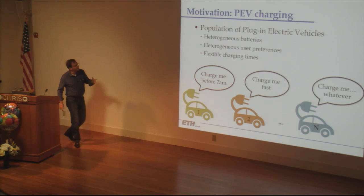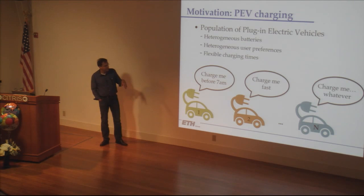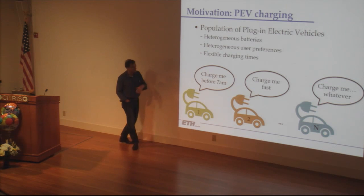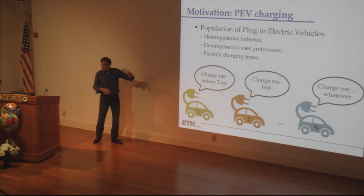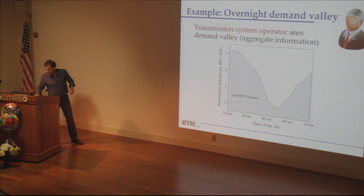The problem is: if you have a population of plug-in electric vehicles, each one has its own constraints and requirements. They want to be charged by a certain time, charged as fast as possible, they have certain limits on how much charge they can accept at any point in time, and so on. They're heterogeneous — everyone has a different profile — and you need to coordinate them.